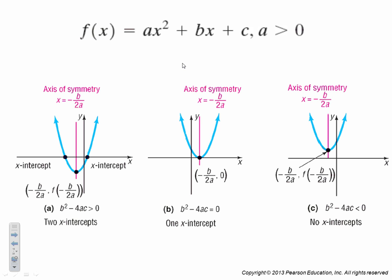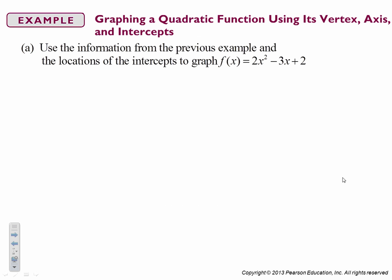Alright, so let's recap. So if I have two solutions, my parabola crosses twice. If I have one solution, it taps the x-axis. And if I have no solution, then it is above or completely below the x-axis.